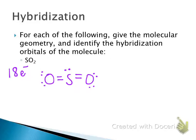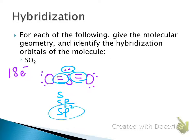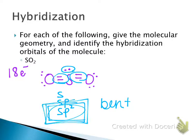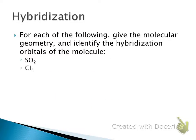For SO2, how many total domains do we have? Three — a double bond still only counts as one domain, so we have three domains total. Counting: s, sp, sp2. So the hybridization is sp2. The shape would be bent, which is one of the possible shapes for sp2. Any questions about how we got to sp2?